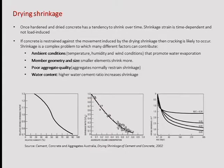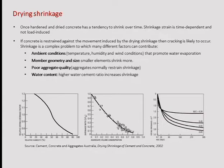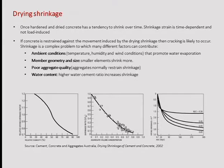Shrinkage is another issue. It doesn't necessarily depend on your mixture — it might depend on time. It becomes a problem especially for very tall buildings. The world's tallest building is over 800 meters and is done in concrete — a shrinkage of 20 to 30 centimeters at that scale becomes notable. Shrinkage is a natural property of concrete that continues over time. It can be caused by ambient conditions, but also by poor aggregate quality or incorrect water-cement ratio, especially during the curing phase.